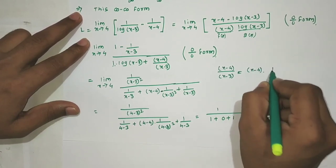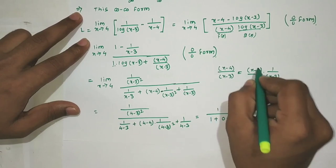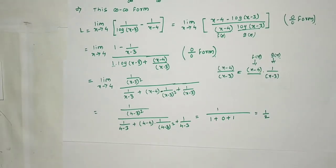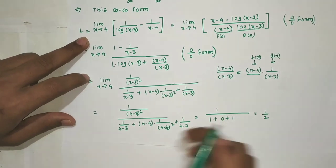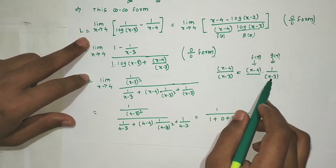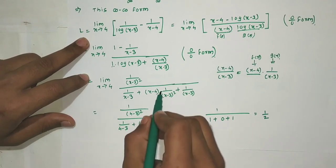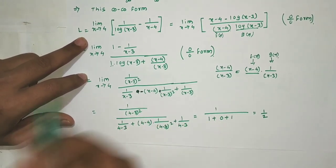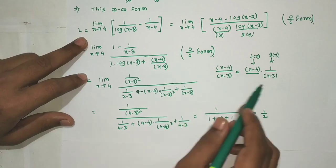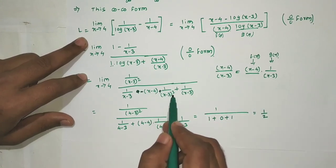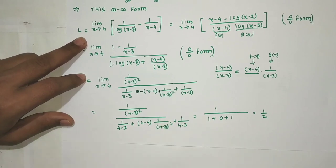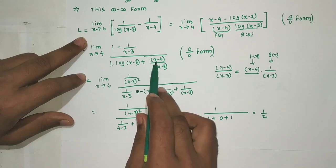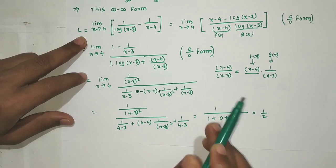The derivative of the denominator expands as: (x-4)·(-1/(x-3)²) + (1/(x-3)) + 1/(x-3). Putting x=4 in the numerator: 1/(4-3)² = 1/1 = 1. In the denominator: (4-4)·(-1/1) + 1/1 + 1/1 = 0 + 1 + 1 = 2.